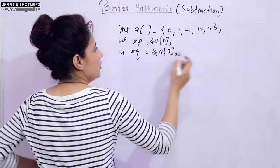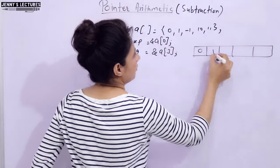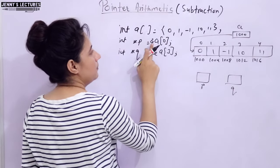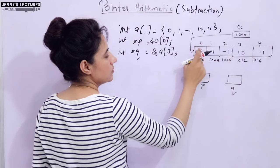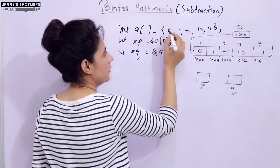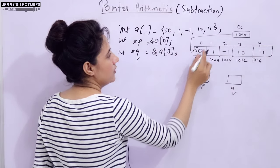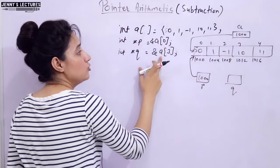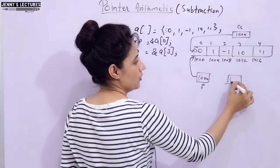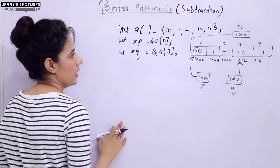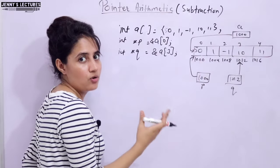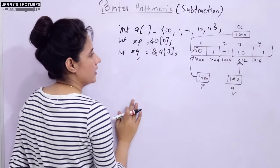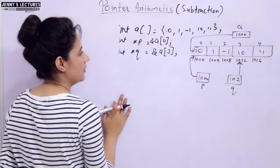Some memory has been allocated to this array A. We have two pointers: P has the address of A[0], which is 1000, so it points to the first element. Q has the address of A[3], whose address is 1012, so it points there. A is a constant pointer containing the base address 1000. By default, an integer takes four bytes, so those are the addresses of all elements of the array.